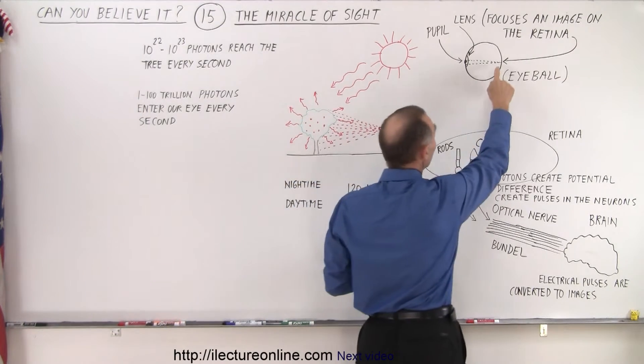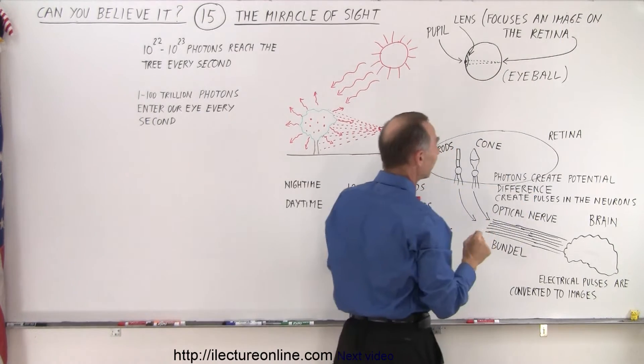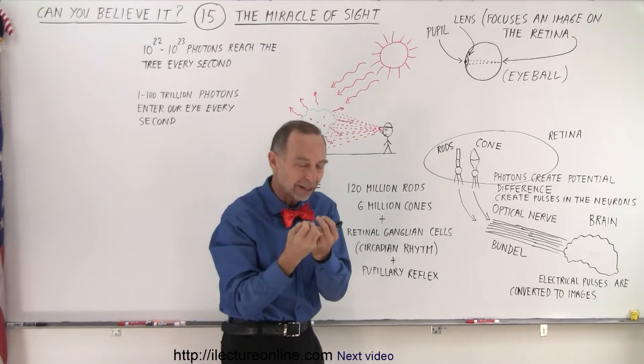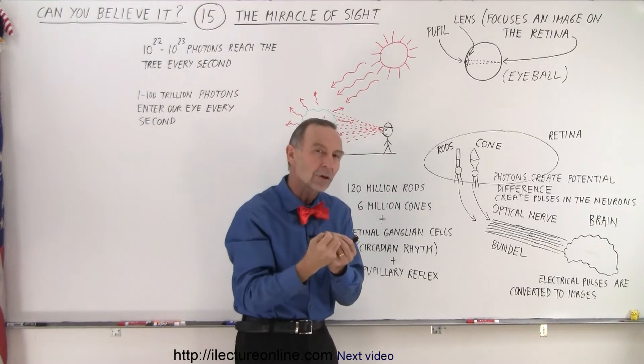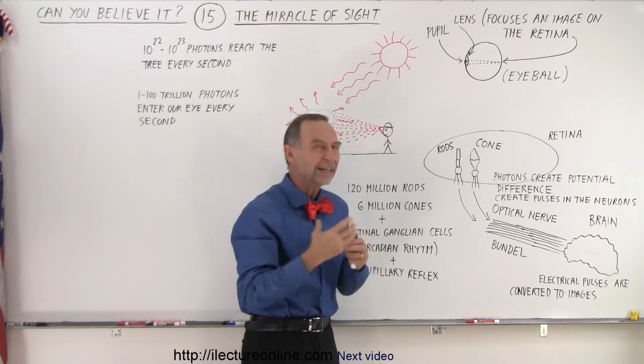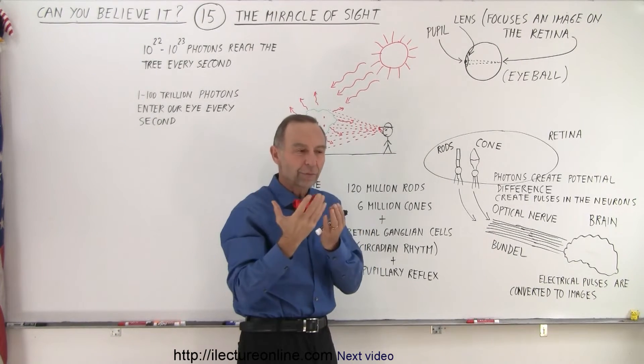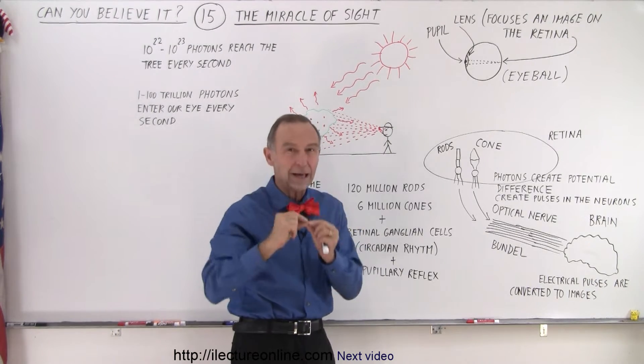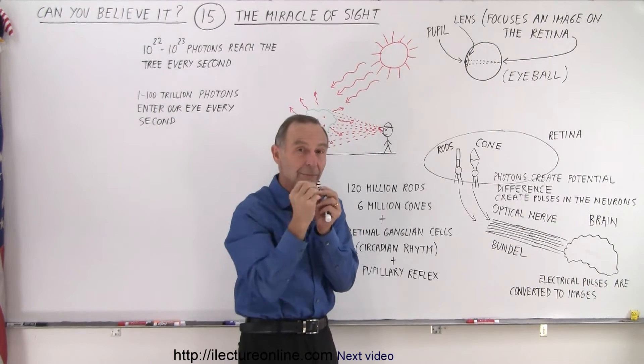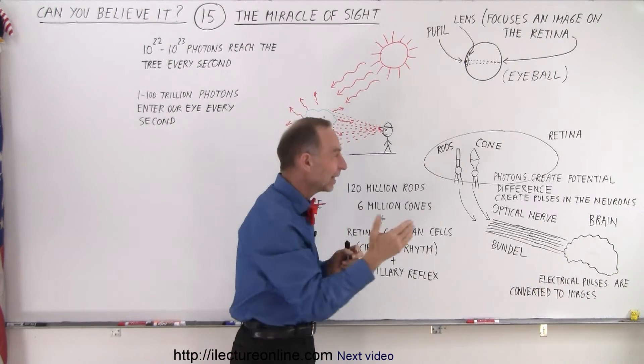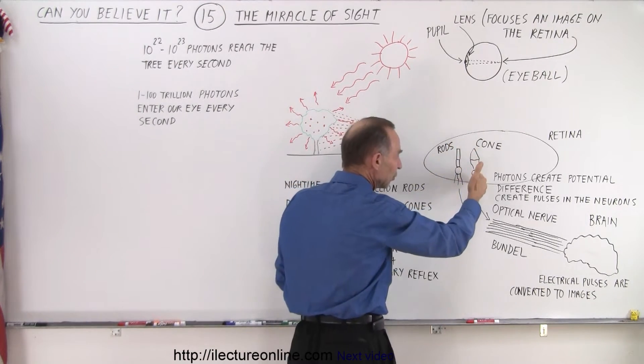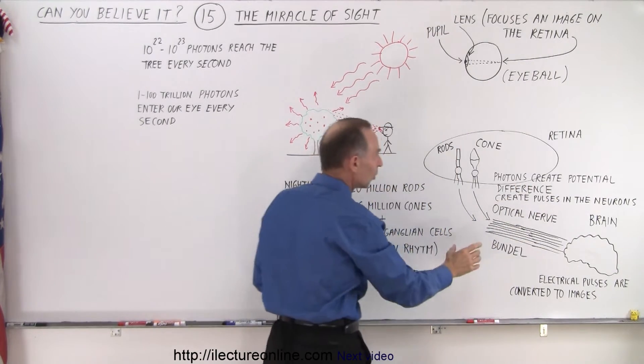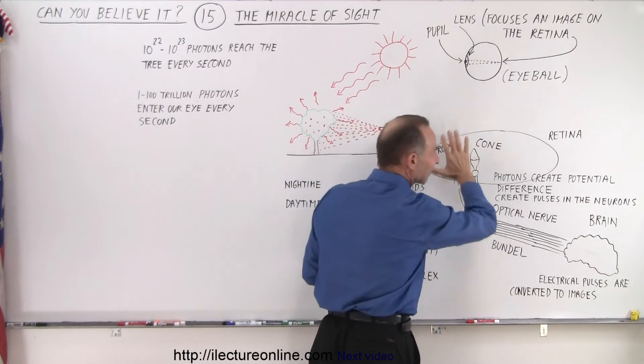Once the image is formed at the back of the eye, that's where we find the retina. The retina is a region that has light-sensitive cells, cells that can actually take those photons and convert them into electrical signals. It does that by creating what we call a potential difference—a voltage, kind of like a battery. Every time photons hit them, there's a pulse of a potential difference that then gets channeled onto the nerves, into what we call the optical nerve bundle.